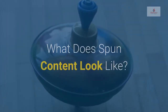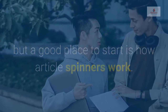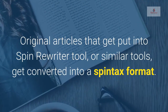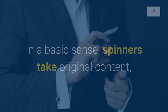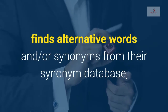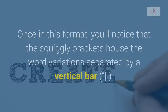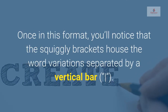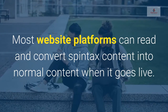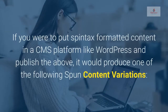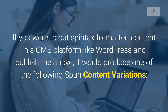What does spun content look like? Explaining content spinning can be a little technical, but a good place to start is how article spinners work. Original articles put into Spin Rewriter, or similar tools, get converted into a Spintax format. Spinners take original content, find alternative words and synonyms from their synonym database to use instead of the original words, and convert the content into Spintax format. Once in this format, you'll notice that squiggly brackets house the word variations separated by a vertical bar. Most website platforms can read and convert Spintax content into normal content when it goes live. If you were to put Spintax formatted content in a CMS platform like WordPress and publish it, it would produce one of the following Spintax content variations.